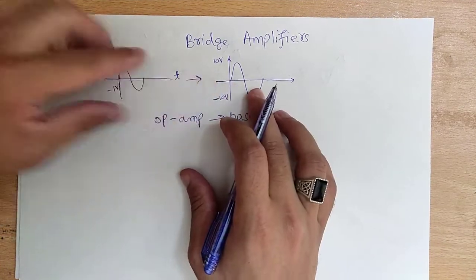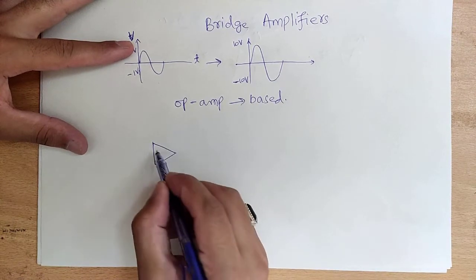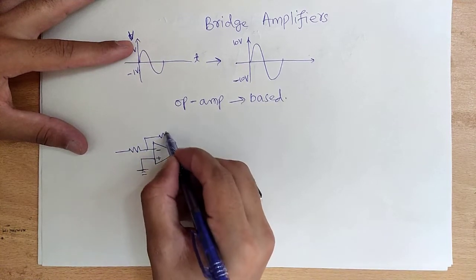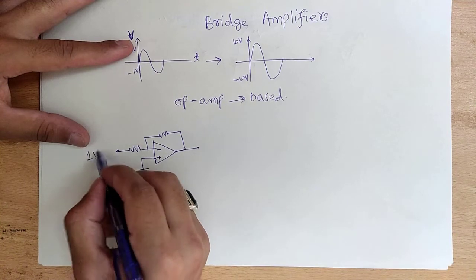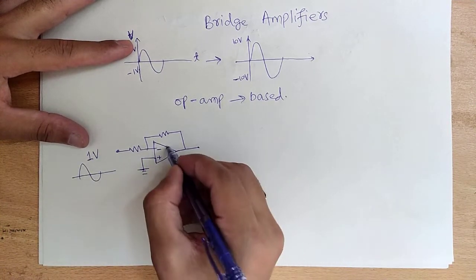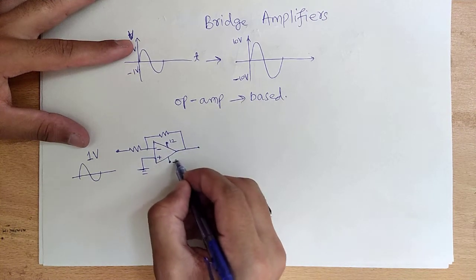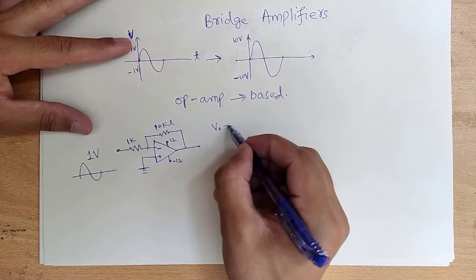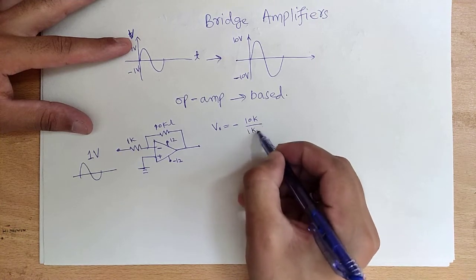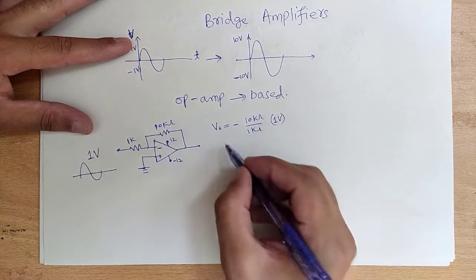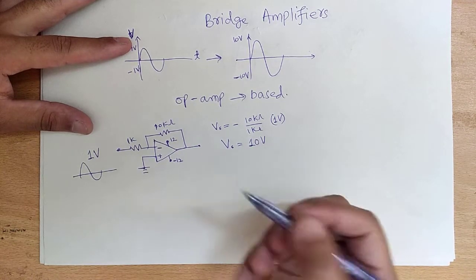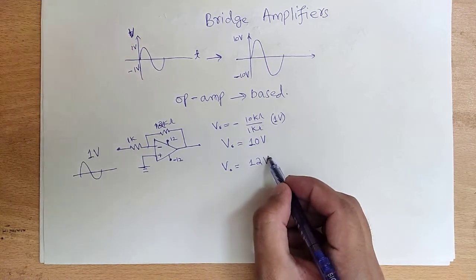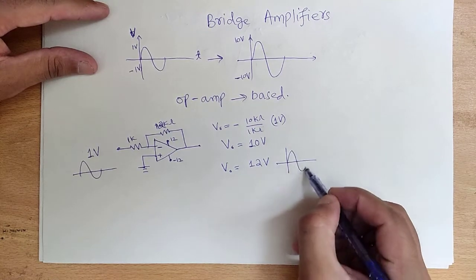Consider a single inverting operational amplifier with a 1 kilo-ohm input resistor and a 10 kilo-ohm feedback resistor. With VCC of +12V and -12V and a 1 volt sinusoidal input, the output equals minus 10 kilo-ohm divided by 1 kilo-ohm multiplied by 1 volt, giving 10 volts. If we increase the feedback resistor to 12 kilo-ohm, the gain increases and we get ±12 volts at the output.